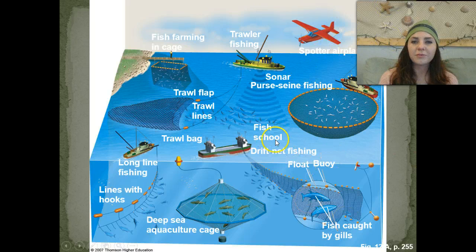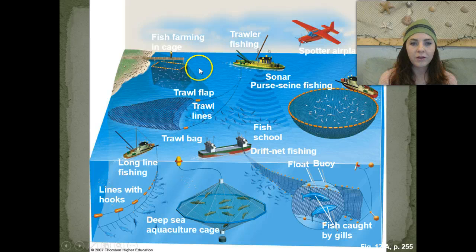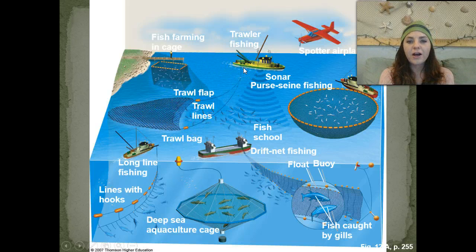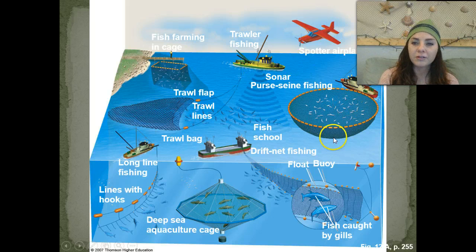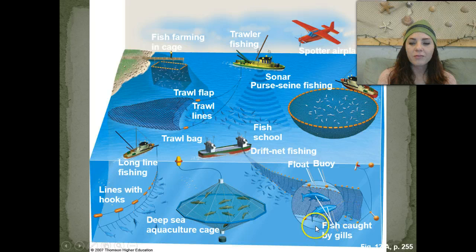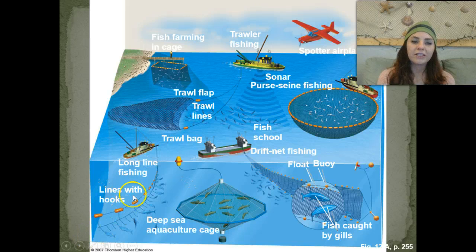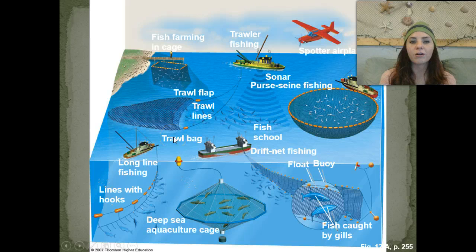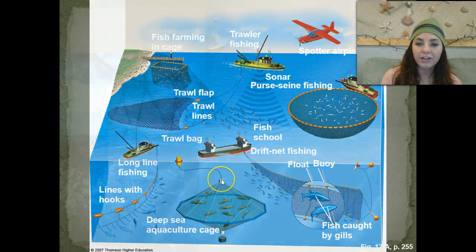These are some of the different types of nets that are deployed: fish farming in a cage, trawl flaps and trawl lines, sonar purse seine fishing, drift net fishing, gill nets, deep sea aquaculture cages, and long lines. Long lines as well as trawls and gill nets are among the most debated types of fishing.